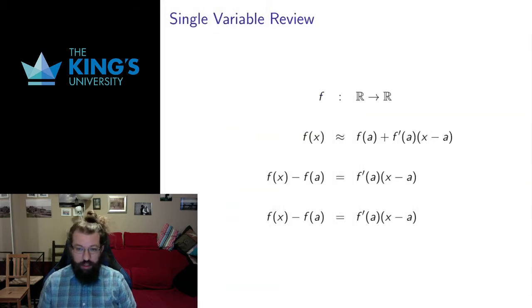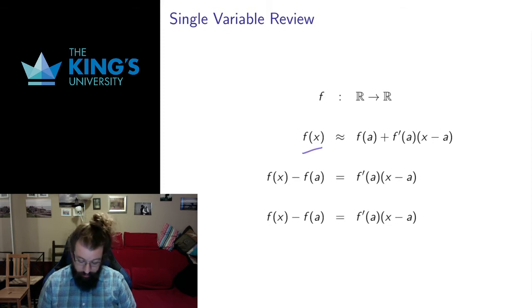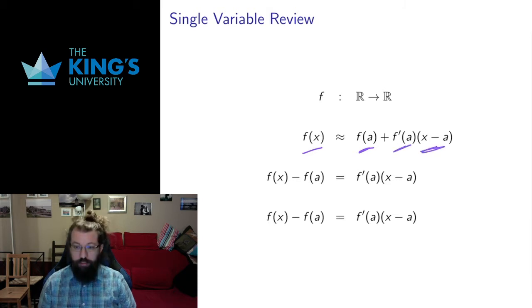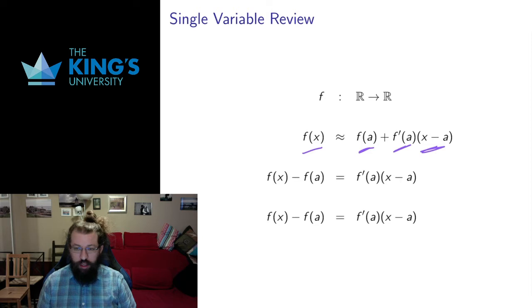For a single variable function, the derivative gave us a linear approximation in this way: the function was approximately equal to its value at a point plus the derivative at that point multiplied by x minus a. This is the equation of the tangent line — the tangent line being the graph of the linear approximation that was most like the function near a point a in its domain.